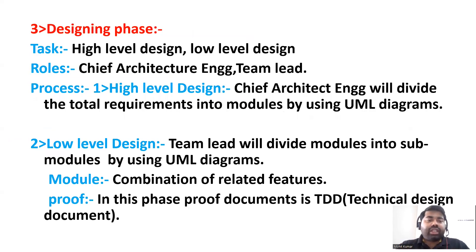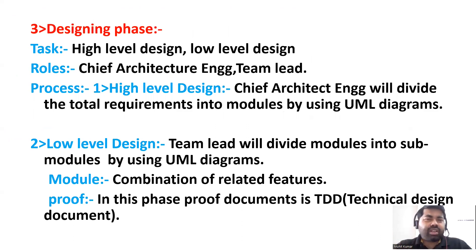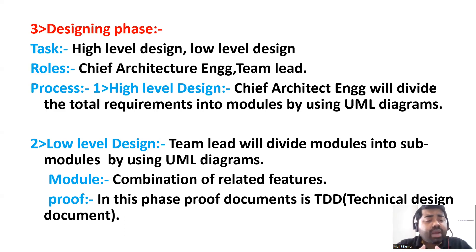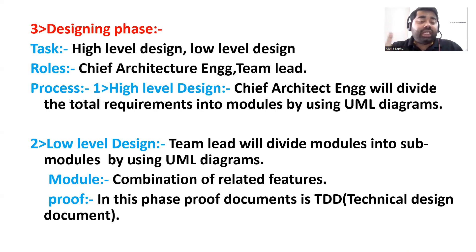The third phase is the designing phase. The tasks are high-level design and low-level design. The roles involved are the chief architect engineer and team leads. The chief architect engineer divides the total requirements into modules using UML diagrams. The team lead then divides each module into sub-modules using UML diagrams. The proof document here is the TDD — Technical Design Document.